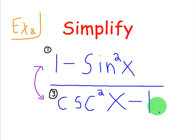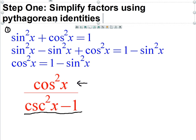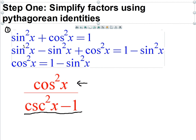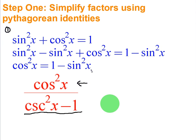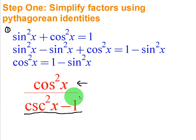However, let's go ahead and follow the steps we learned before and make sure we are proactive about that. So the first step says to simplify the factors using Pythagorean identities. Before we skipped that step, but in this particular case, we're going to go ahead and use it.